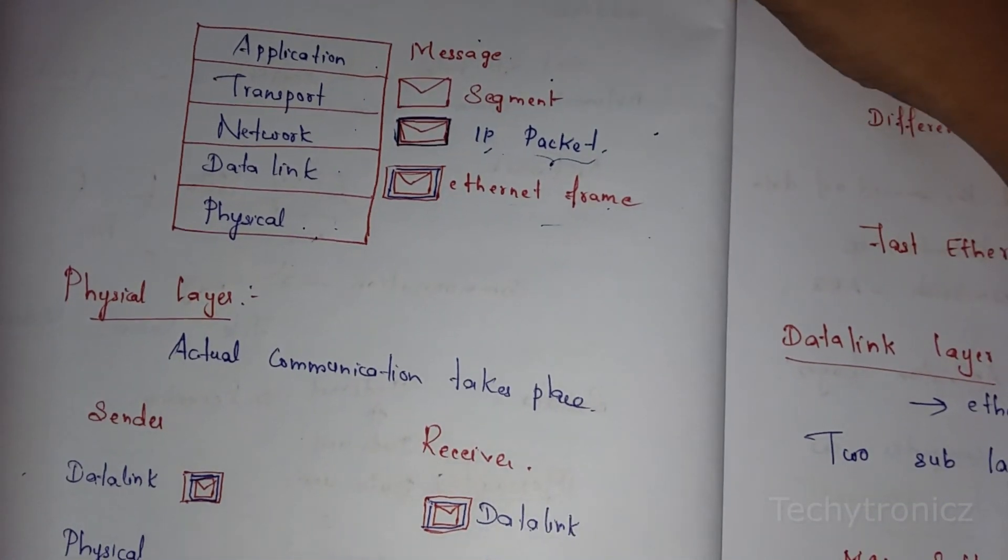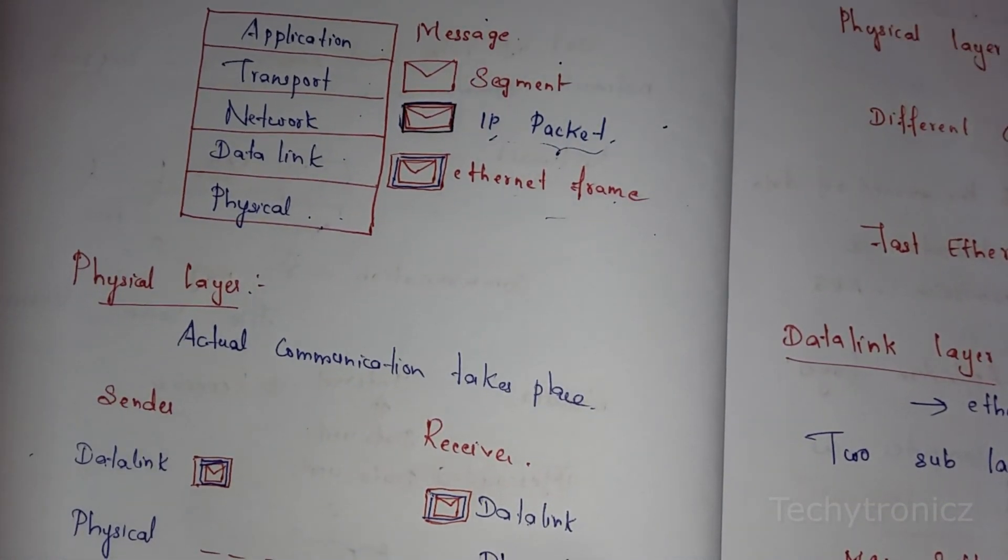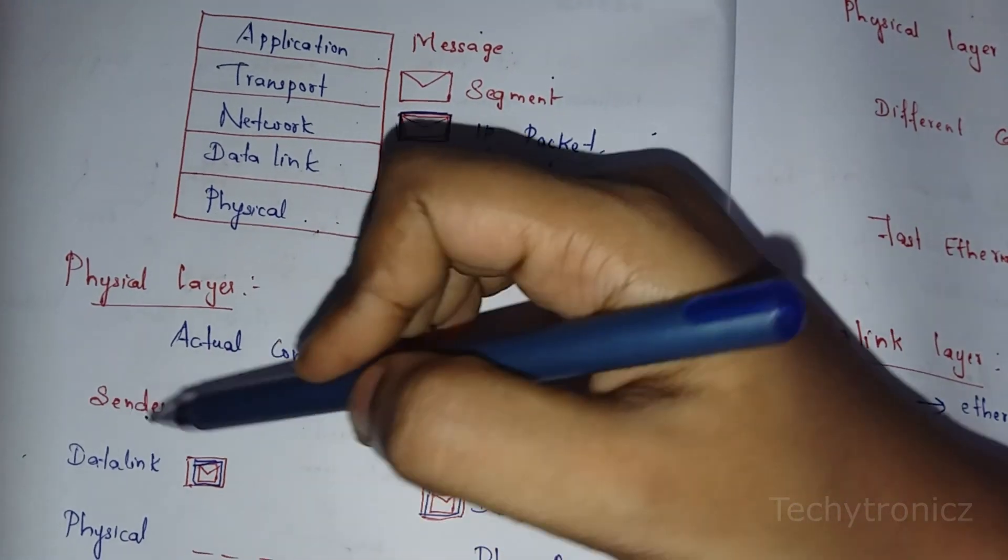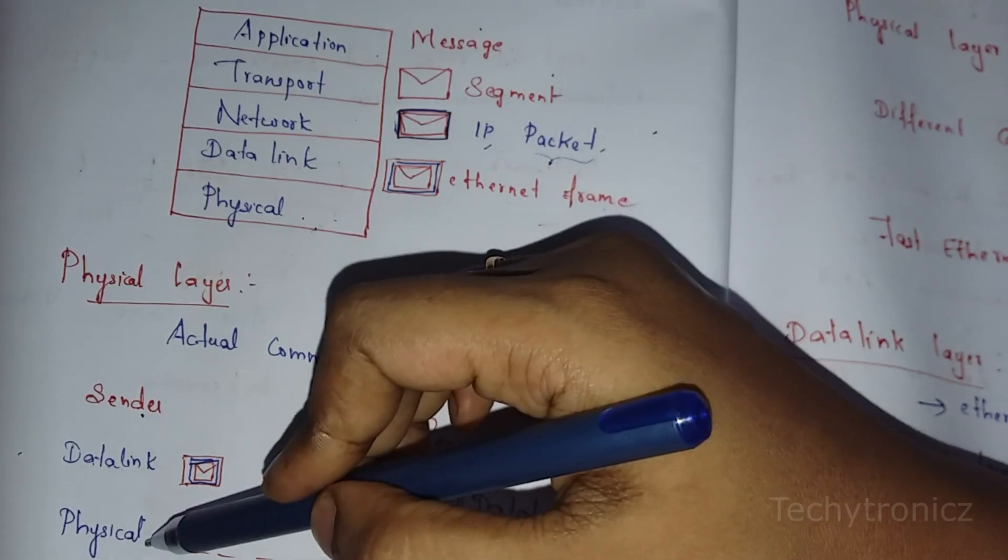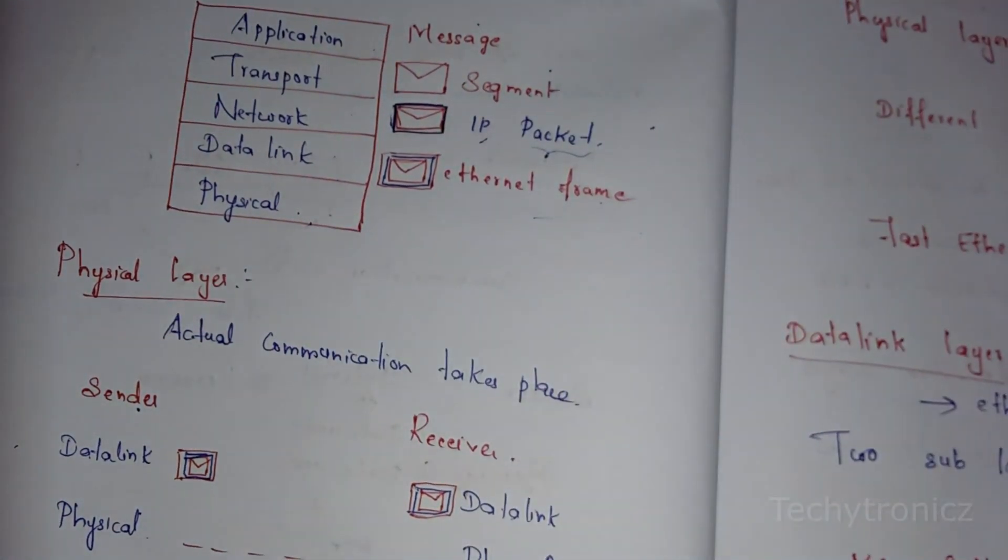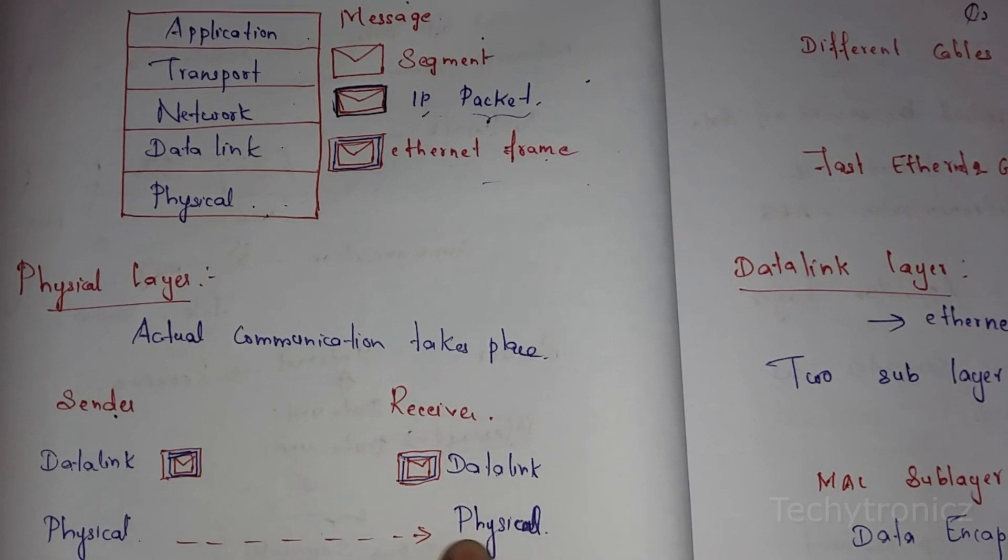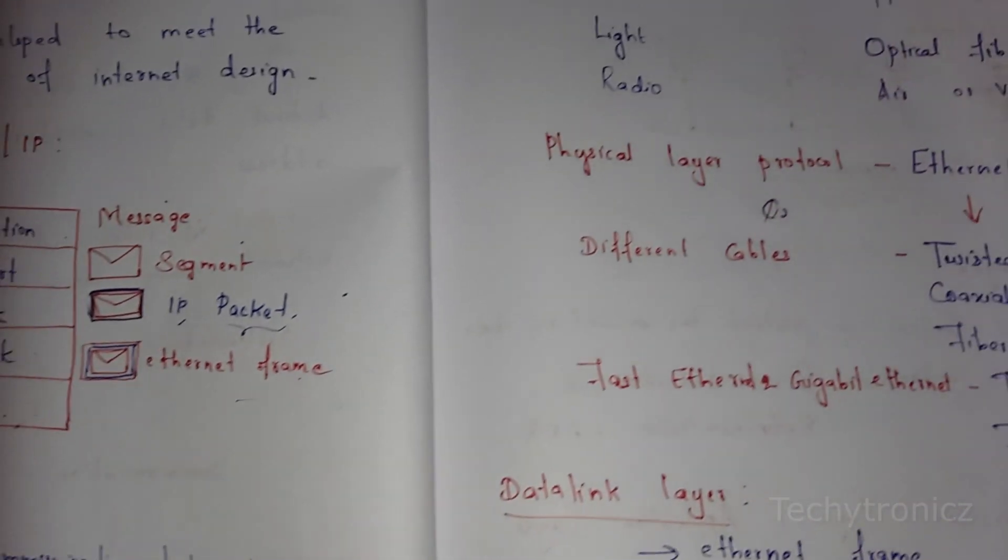The Physical Layer is where actual communication takes place. From the sender's Data Link Layer to the Physical Layer, data is transmitted through a transmission medium to the receiver side's Physical Layer.